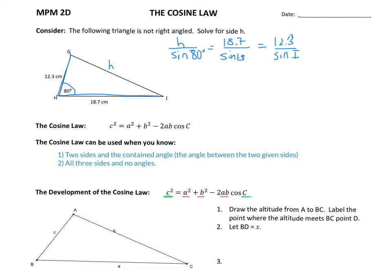For example, if I wanted to solve for side B, I could write that as B squared equals A squared plus C squared, then minus two AC times the cosine of angle B. So the B's are on the outsides. I can use any letters I want in any order; I just have to follow the pattern.